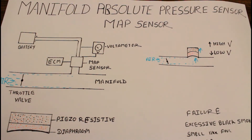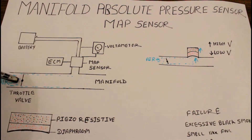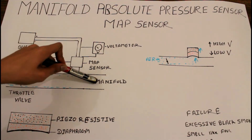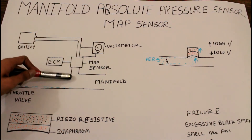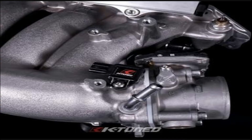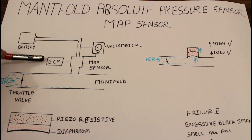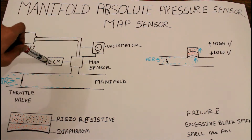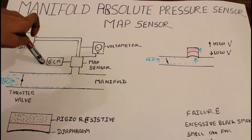Let's look at the position of the MAP sensor. This is the throttle wall and the manifold — the MAP sensor is situated in between the manifold and the throttle wall. The MAP sensor is connected with the battery, the voltmeter, and the ECM — electronic control module — which is used to calculate the amount of fuel injection inside the engine cylinder.